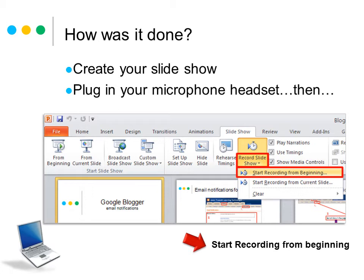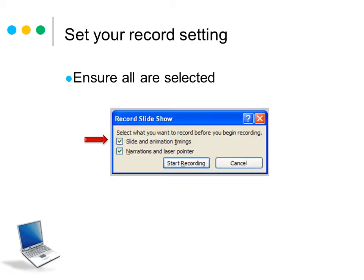You'll also notice there's another option in the menu called Start Recording from Current Slide, which is quite handy if you've recorded part of the way through and made a mistake — you can go back to a specific slide and carry on recording from that point, which will save you a lot of time. After you've clicked the Record Slideshow button, a pop-up appears. The important thing is to ensure you've selected all the options you need: if you want to record slideshow and animation timings, make sure it's checked, and the same for narration and laser pointer.